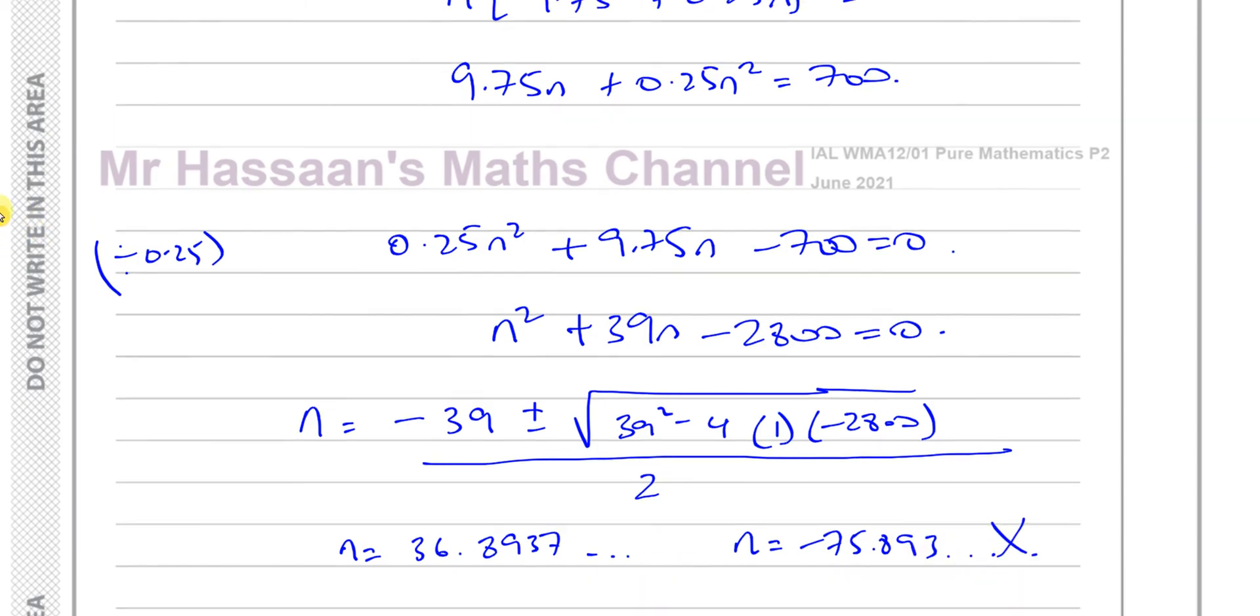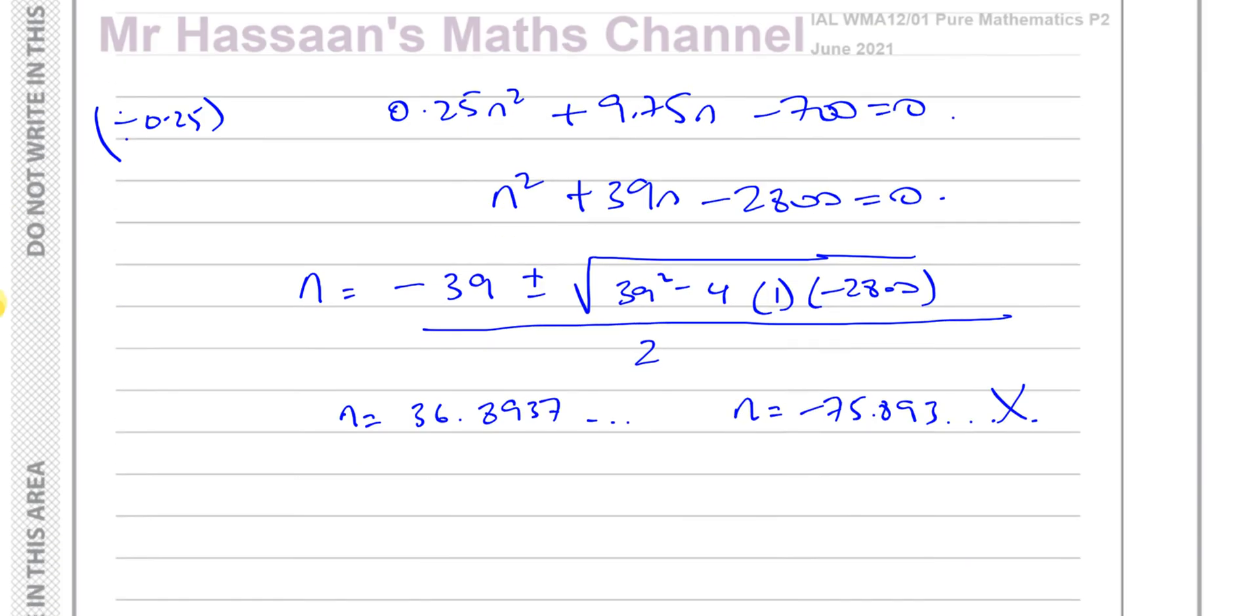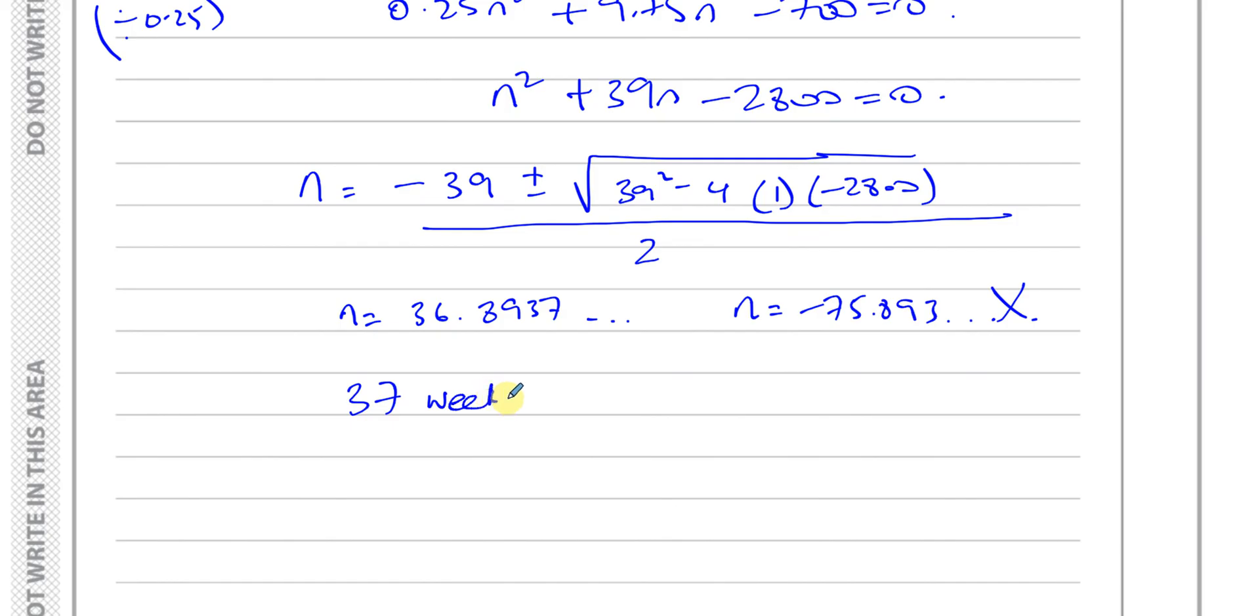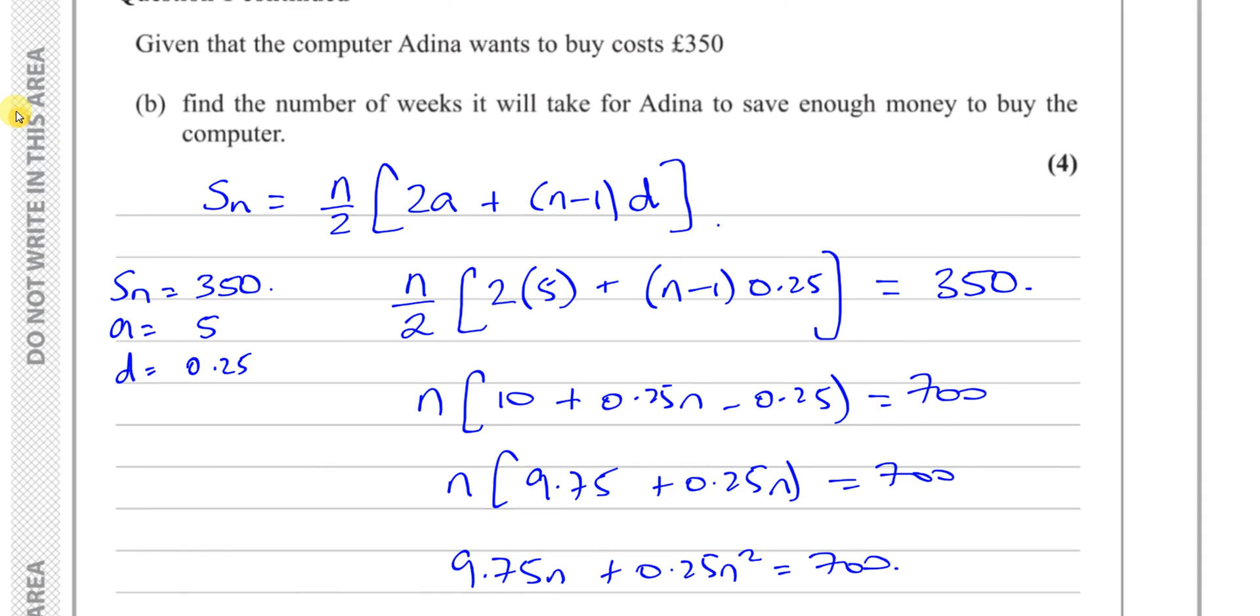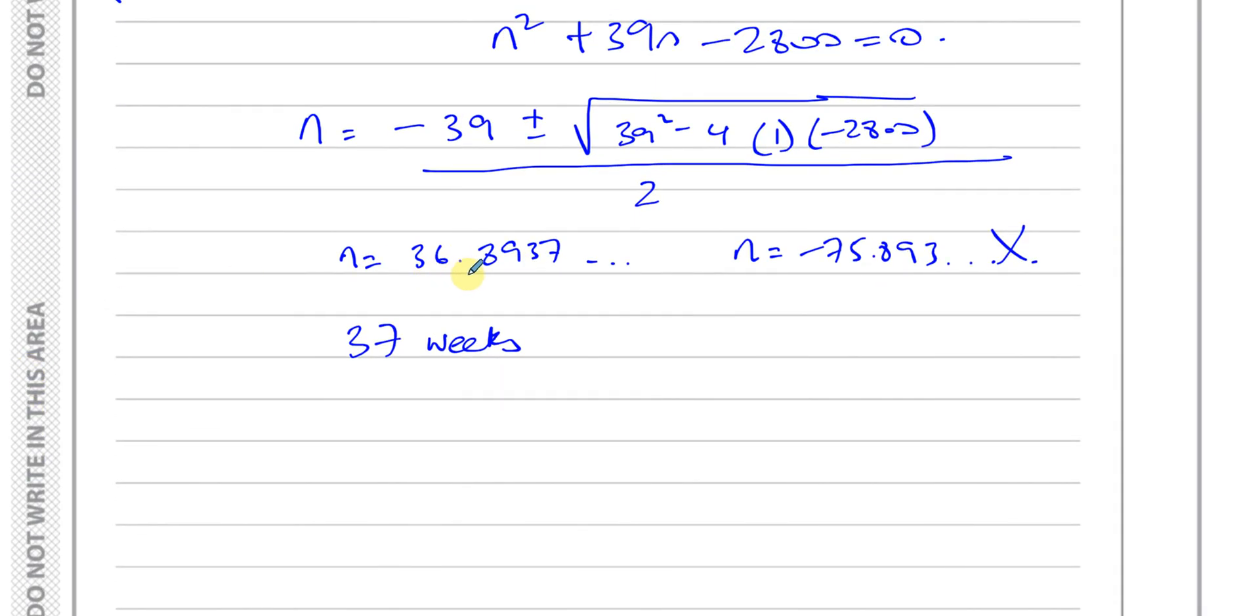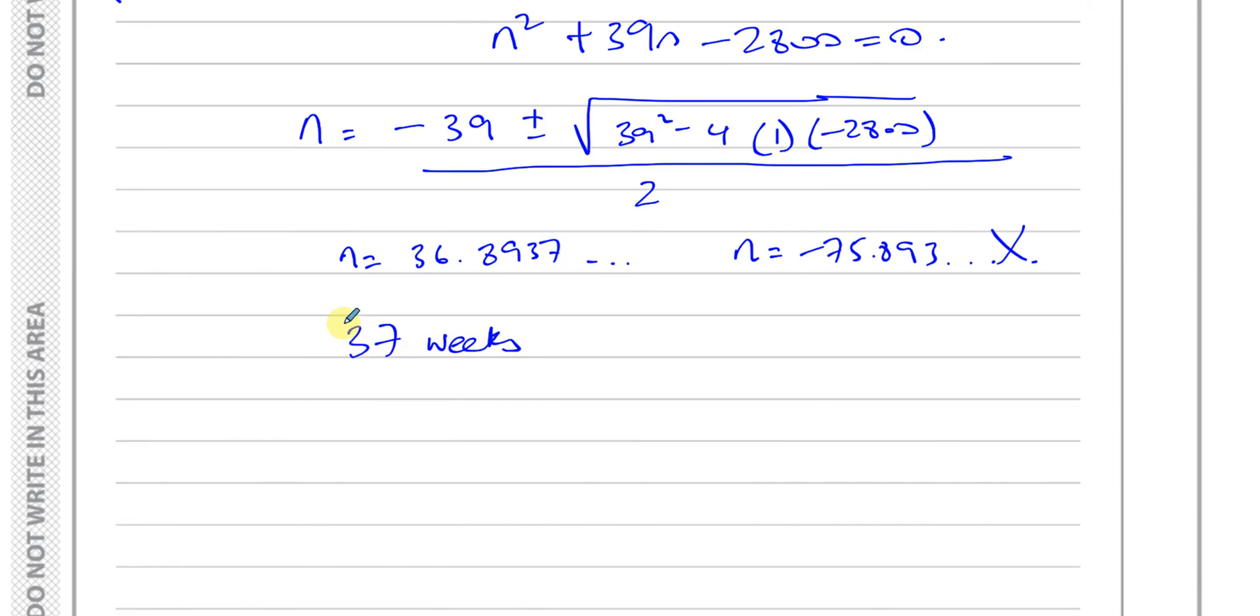By the time you reach 36.8 weeks, you will have the amount needed. So it's going to take 37 weeks altogether for her to have saved enough to buy the computer. By the 36th week, she will have just under what she needs. By the 37th week, she will have just over what she needs. So it's going to take 37 weeks altogether to save enough money to buy the computer. That's the answer to question number one.